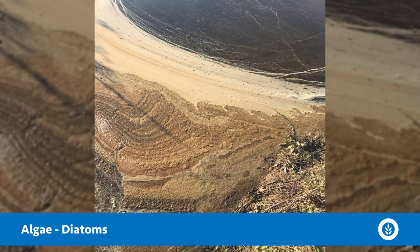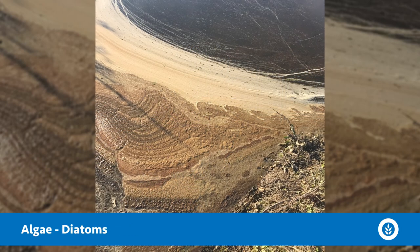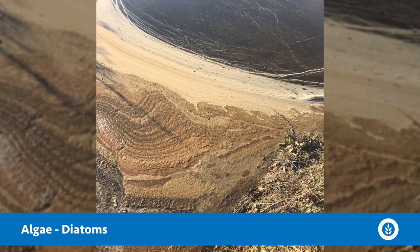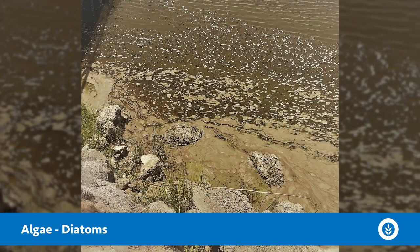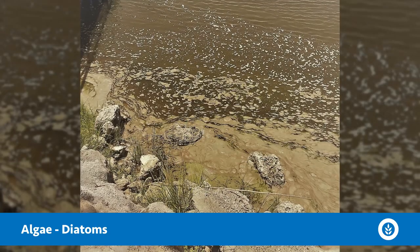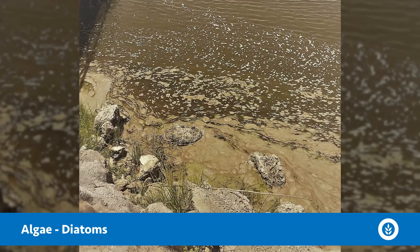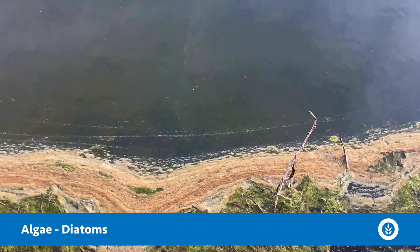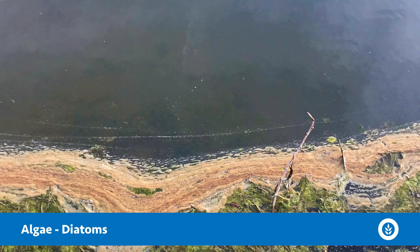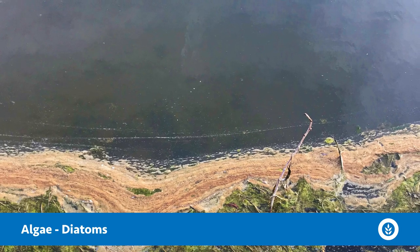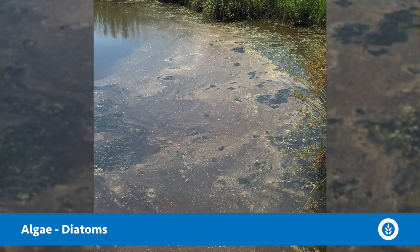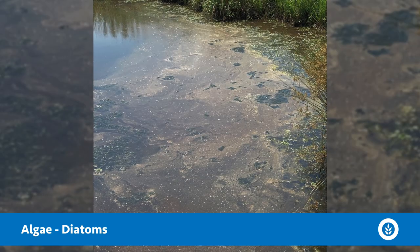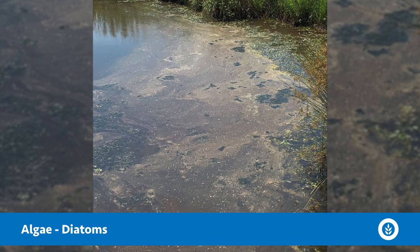Another type of algae are the diatoms. These have a big central vacuole where they store lipids and fatty acids, which are less dense than water. These can pop up and form more of a frothy, brown, foamy-looking scum on the surface of a water body.